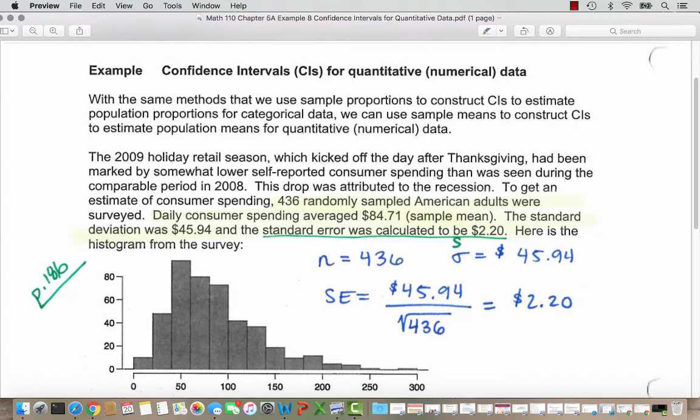With the same methods that we use sample proportions to construct confidence intervals to estimate population proportions for categorical data, we can use sample means to construct confidence intervals to estimate population means for quantitative numerical data.